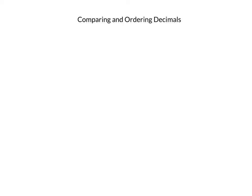Today we're going to talk about comparing and ordering decimals. Comparing means seeing which one's bigger or which one's smaller. And ordering means ordering the decimals from least to greatest, or maybe from greatest to least.